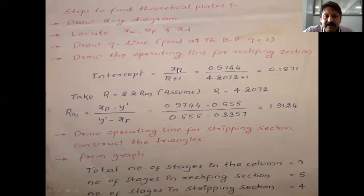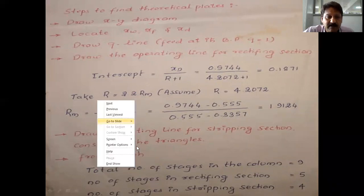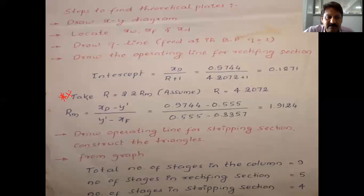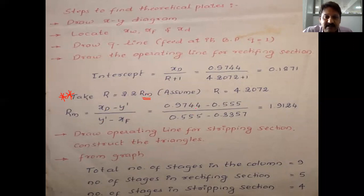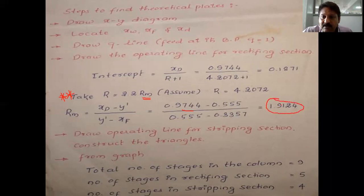Since the reflux ratio is not given in the problem, assume R = 2.2 × Rm (a standard assumption). Therefore R = 2.2 × 1.9124 = 4.2072. The y-intercept of the enriching section operating line is xD / (R + 1) = 0.9744 / (4.2072 + 1). Calculate this intercept value and locate it on the y-axis of the McCabe-Thiele diagram.